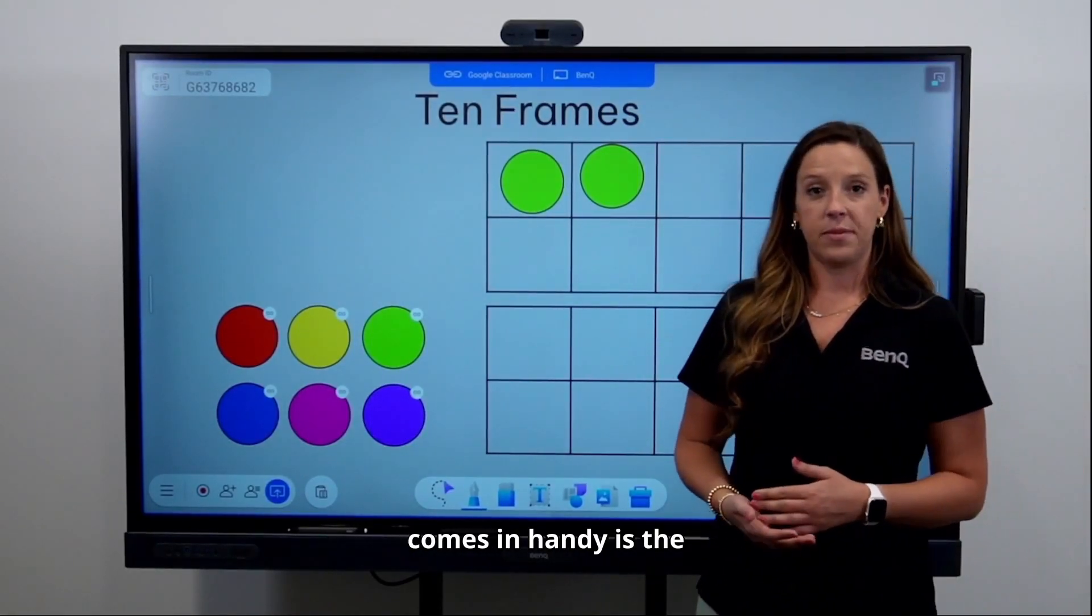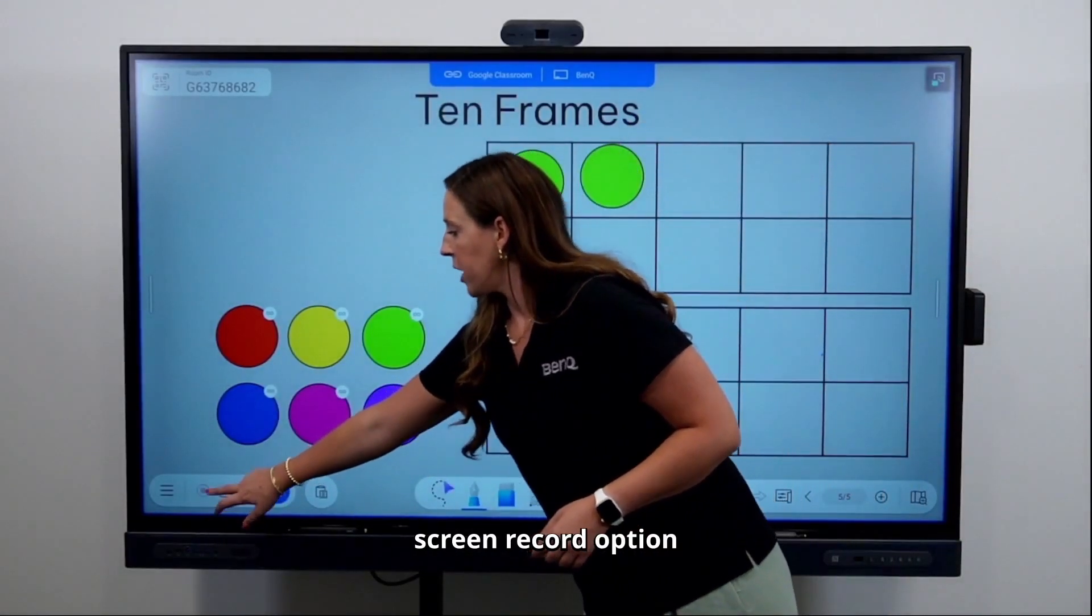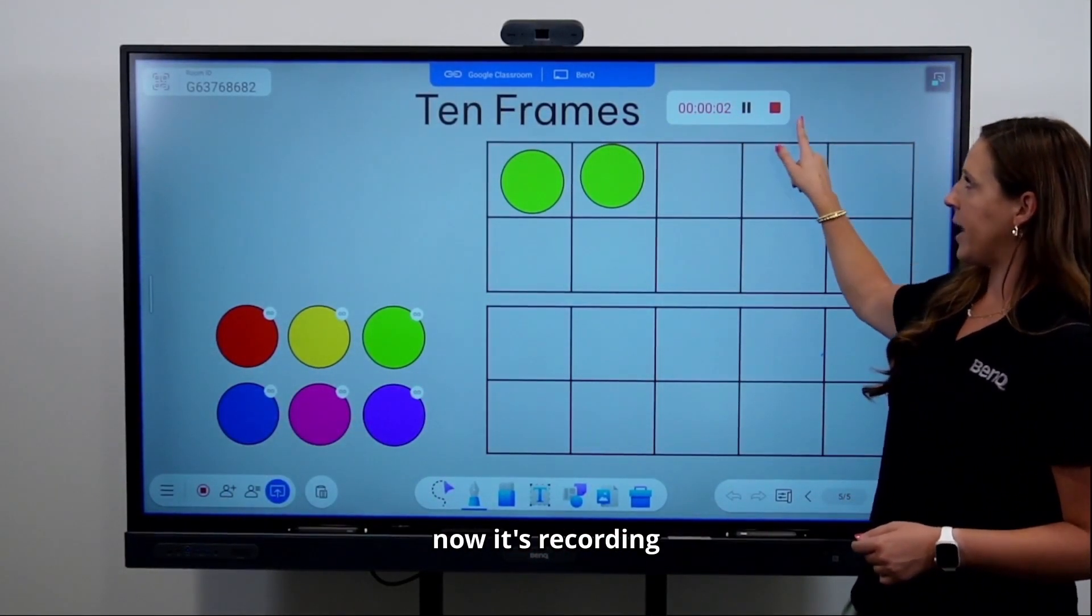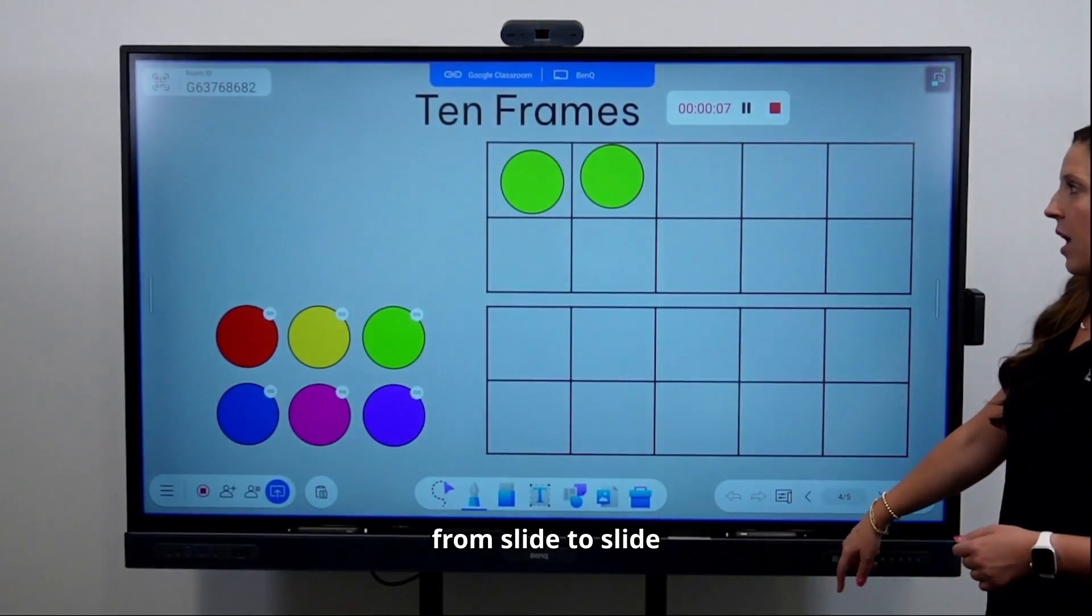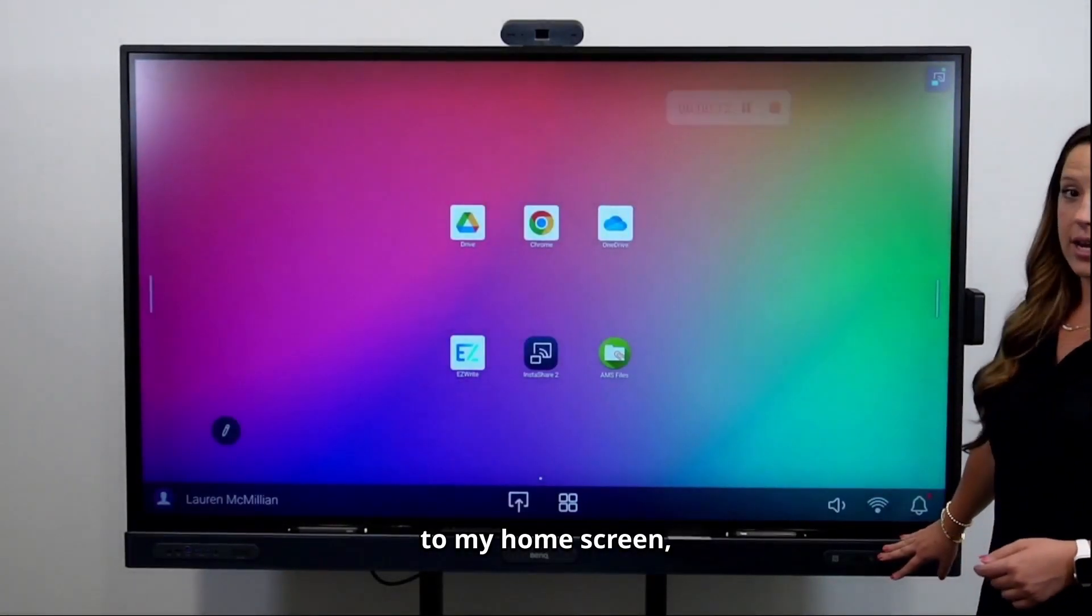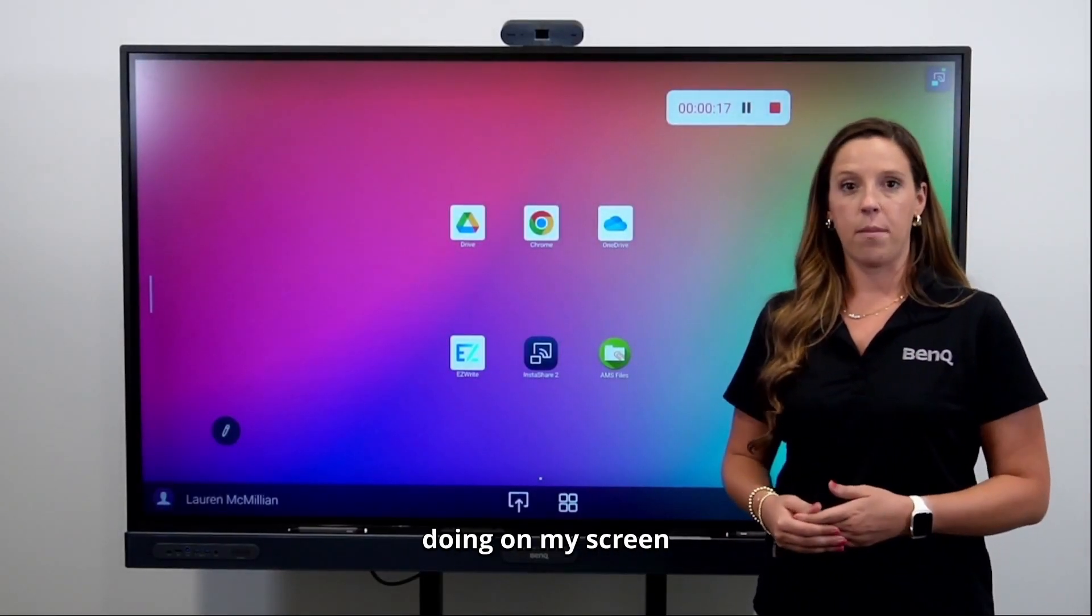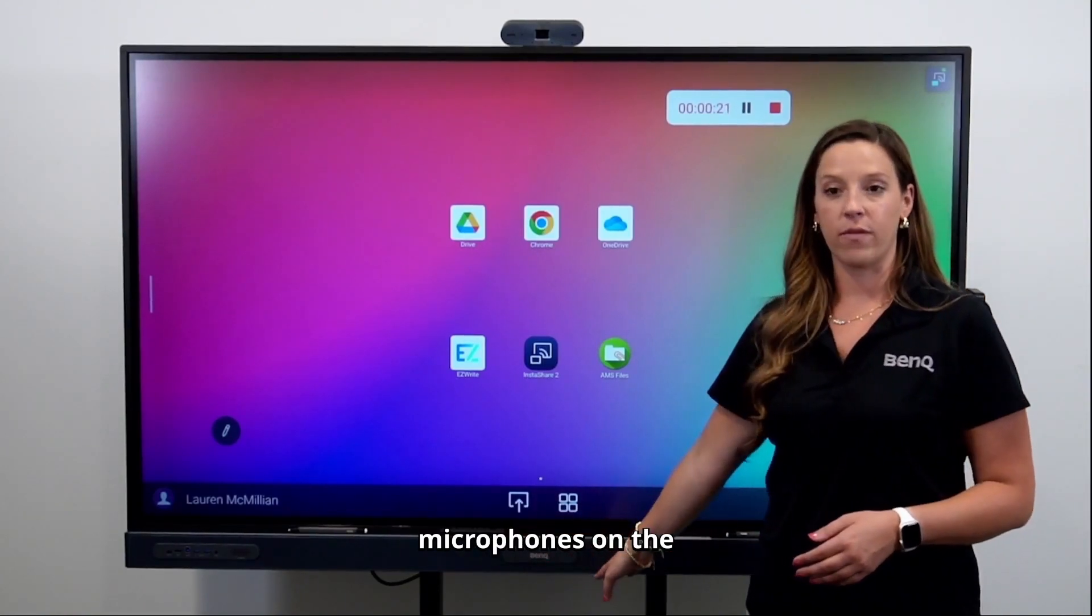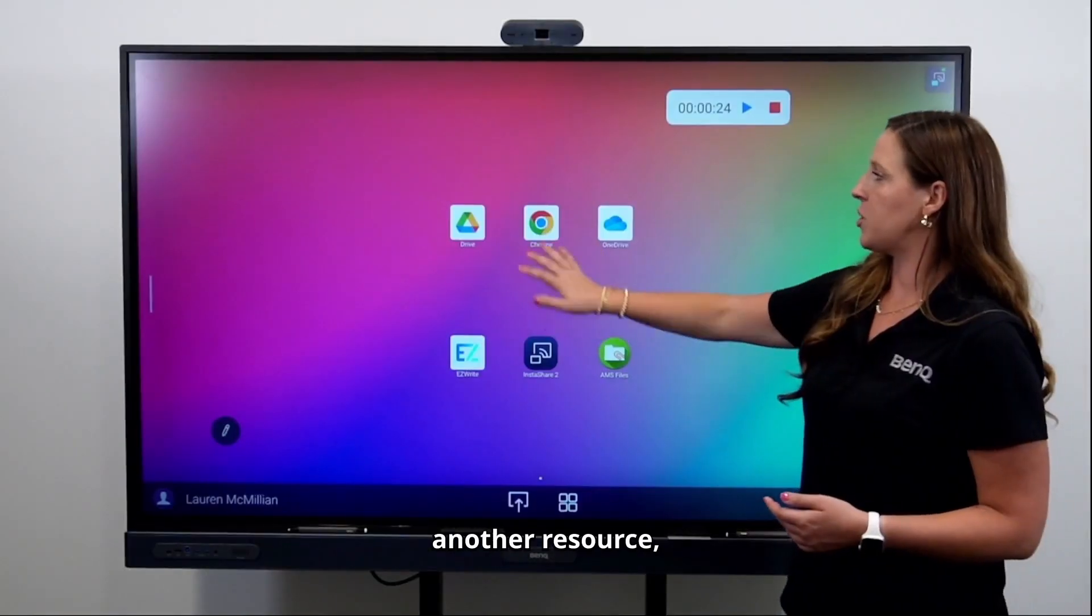Another tool that really comes in handy is the screen record option. I tap the record and now it's recording everything I'm doing on the screen. So even when I'm navigating from slide to slide or going to different locations, or even if I go to my home screen, the recording is still going. This is recording everything I'm doing on my screen, as well as recording my voice using the microphones on the front of the panel.